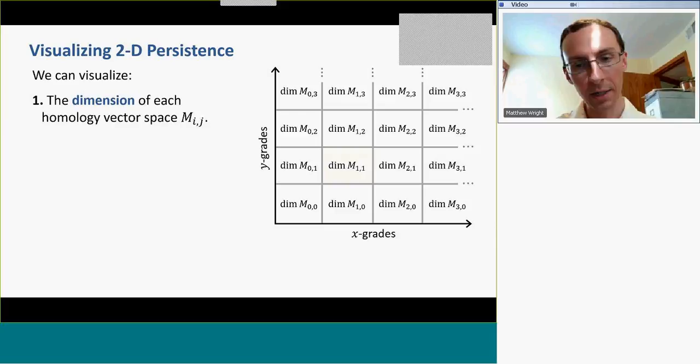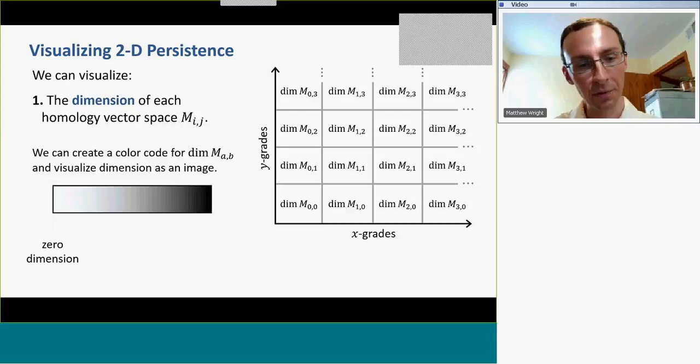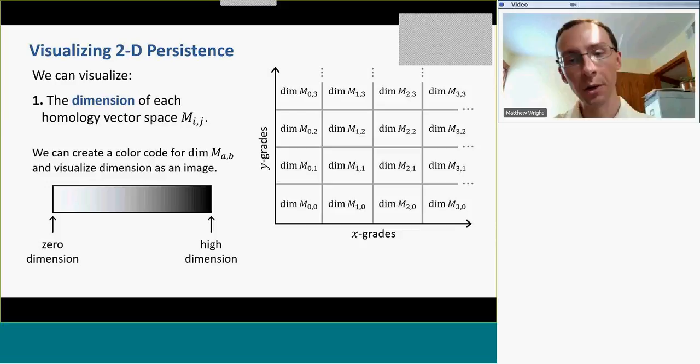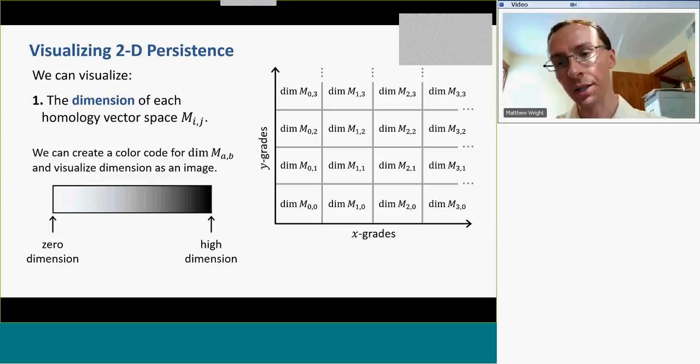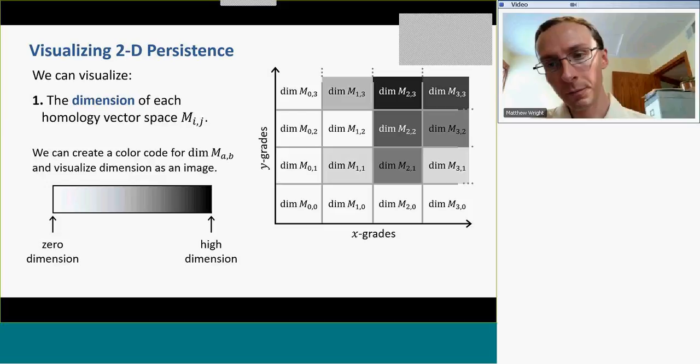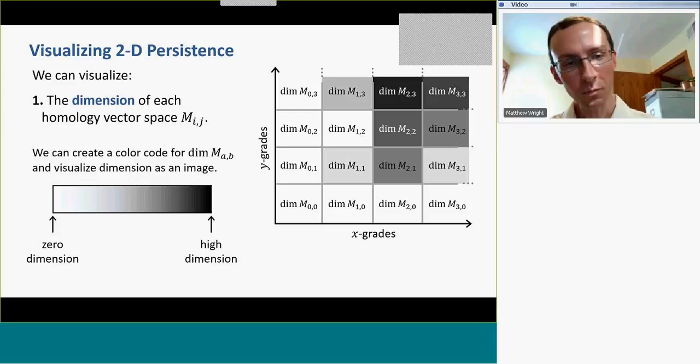Perhaps we'll let white indicate dimension zero, and then a gray scale gradient where a dark color like black indicates whatever the highest dimension is of any of these vector spaces in our module. So we get these squares in our grid, and perhaps the visualization will look something like this — we just color the box according to the dimension of the vector space that's in the box. This is a visualization of two-dimensional persistence.